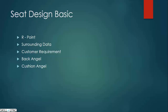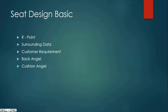Surrounding data will include the B-pillar, A-pillar, front mirror, where the pedals are, where the IP is, and the BIW — the base where you have to fit the seats. Those things are required to start designing a seat. There should be an understanding from the OEM about how much volume they are giving you to make a seat, so you can design it within that volume.